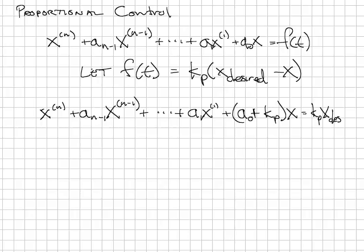The control design task is to pick a value of kp so that the transient response of this new differential equation is something that you desire.